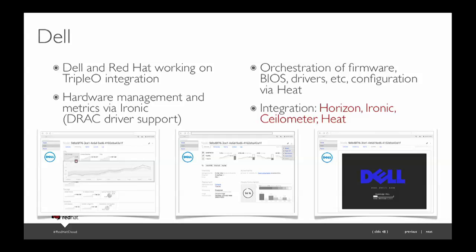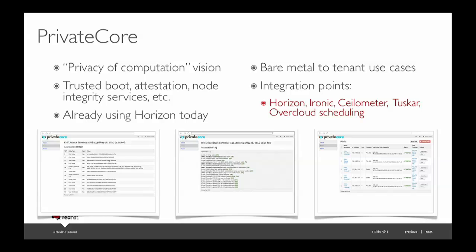Integration areas for Dell: Horizon — we want to bring the console into Horizon so you can drill down to a machine and get console on the hardware. Ironic, Ceilometer for instrumentation, and Heat to describe a rack of Dell gear to meet a certain resource.